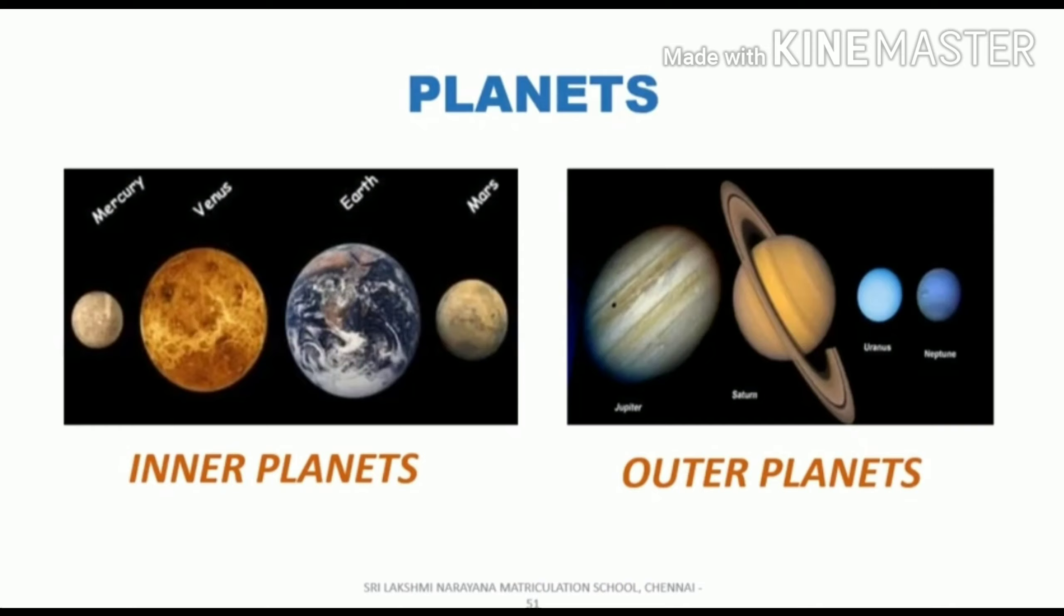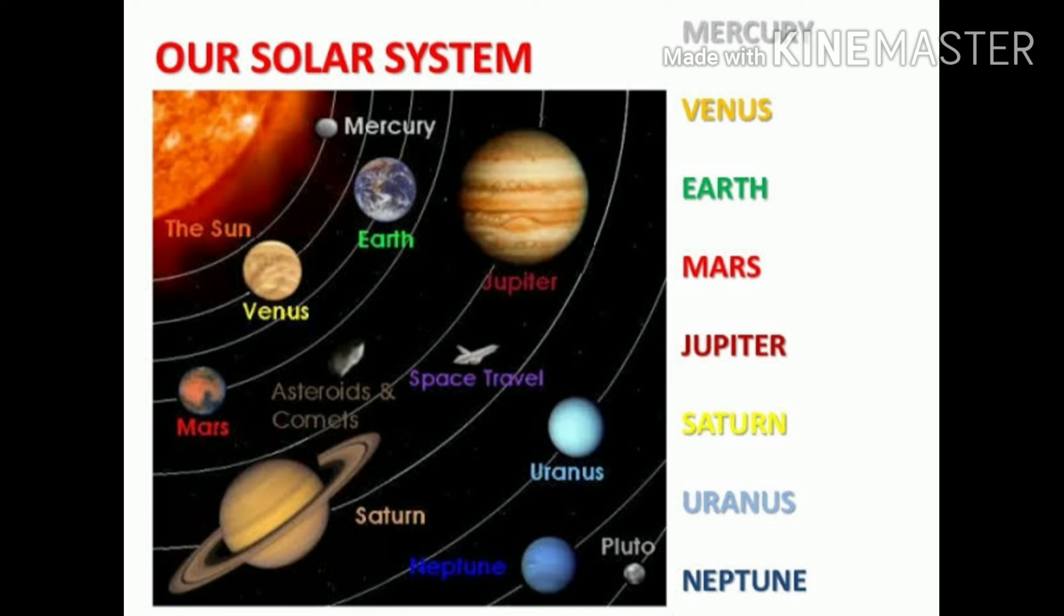The other name for inner planets is rocky planets, and the other name for outer planets is gaseous planets. Uranus and Neptune are considered as frozen planets as they are far away from the sun. Mercury and Venus are the hottest planets, and Uranus and Pluto are icy cold planets.